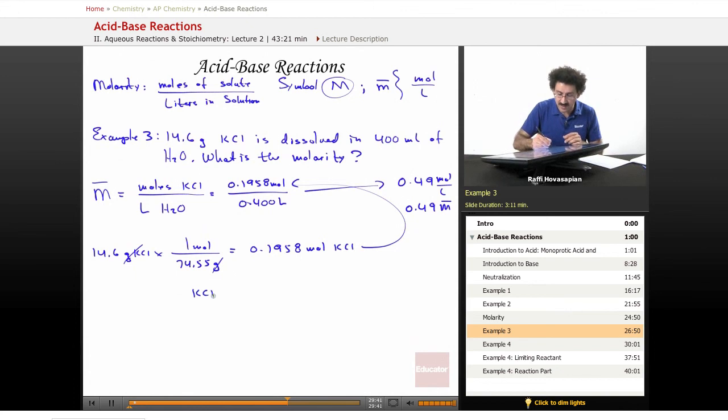This 0.49 tells me that in one liter of solution, I have 0.49 moles of KCl. Potassium chloride is made of one potassium atom and one chloride atom, so I have one mole of potassium and one mole of chloride floating around. Stoichiometry is really important.